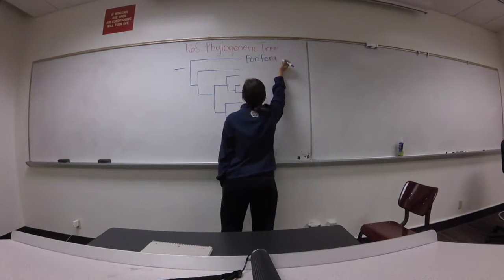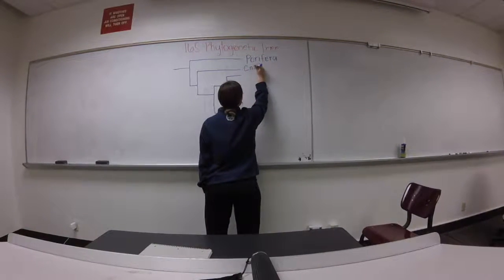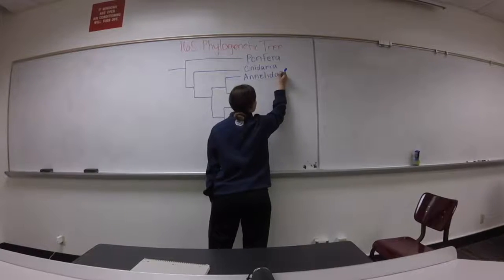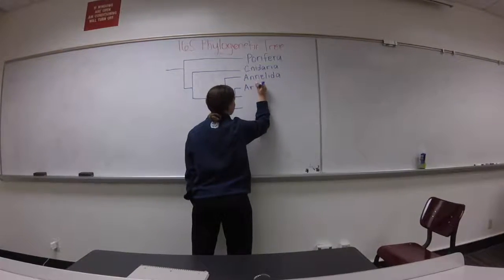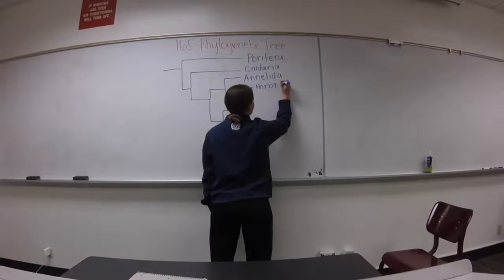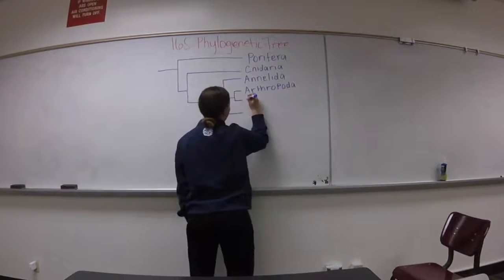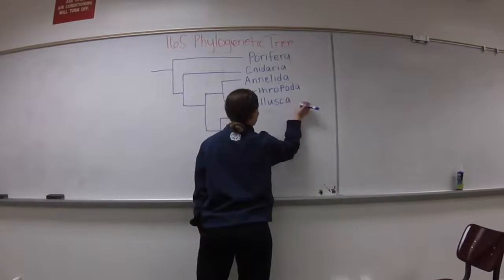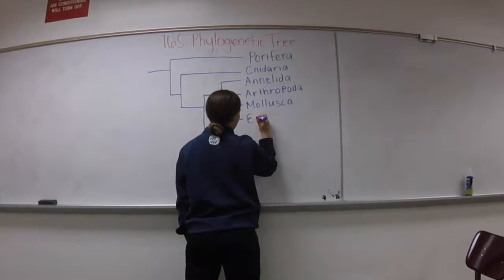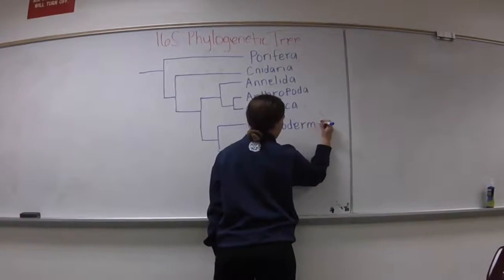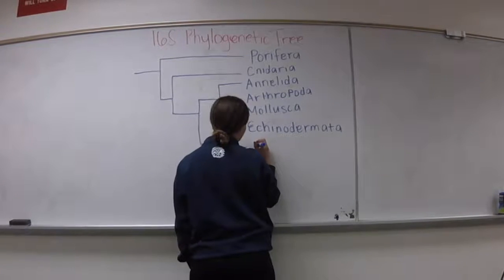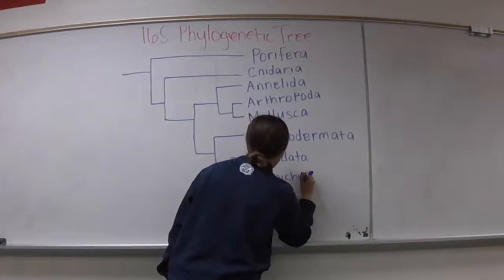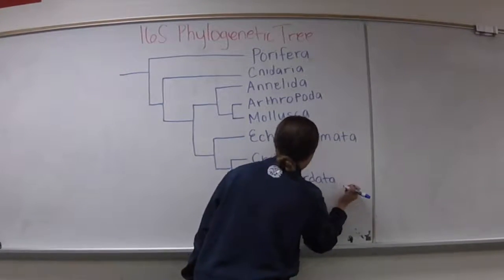In class, we constructed two trees using the 16S gene in the organisms and morphological characteristics. The 16S phylogenetic tree is more accurate because phyla are grouped together based on similarities or differences between DNA sequences, whereas the other tree groups phyla together simply based upon physical traits.